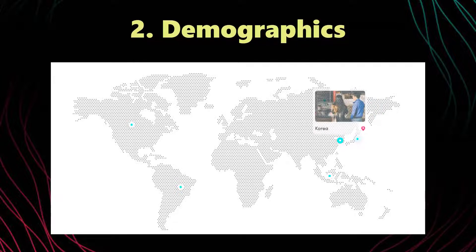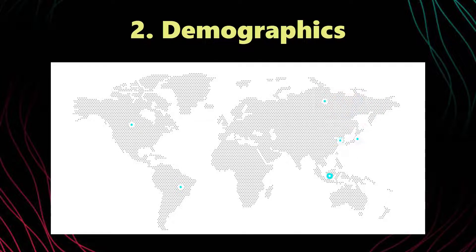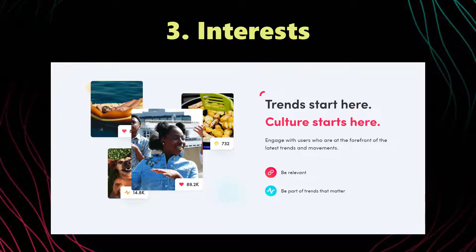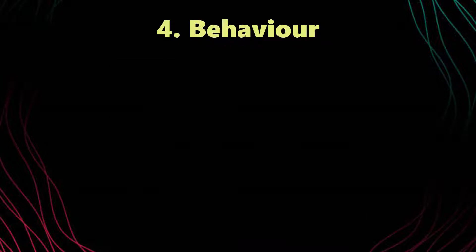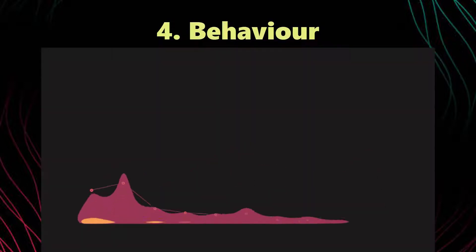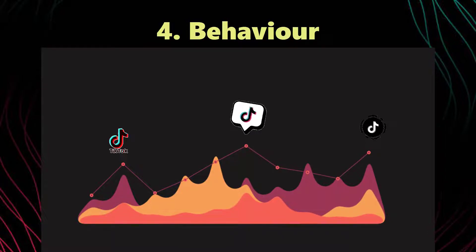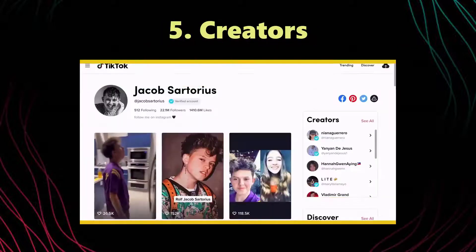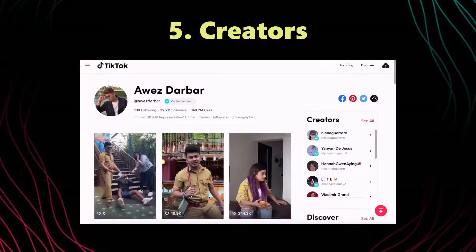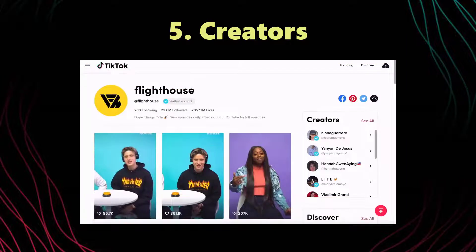Number two is Demographics — these are the general dimensions that marketers use regularly, which includes location, gender, age, and language of the platform on their device. Number three is Interests — interest targeting is based on the behaviors of users and inferences made by the TikTok algorithm dictating their preferences for content. Number four is Behavior — behavior targeting delivers ads based on the user's in-app behavior and interaction with content, such as a like on a nature post within the last seven days.